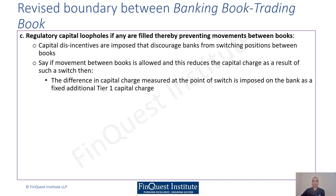Regulatory capital loopholes are to be filled to eliminate the incentive for banks to move instruments between the two books. Capital disincentives are imposed to discourage banks from switching books. If a bank switches an instrument — say from the trading book to the banking book — and the capital requirement decreases as a result, the difference in capital charge at the point of switching will be imposed on that bank as a fixed additional Tier 1 capital charge, which is one of the main ways banks are deterred from such switching.